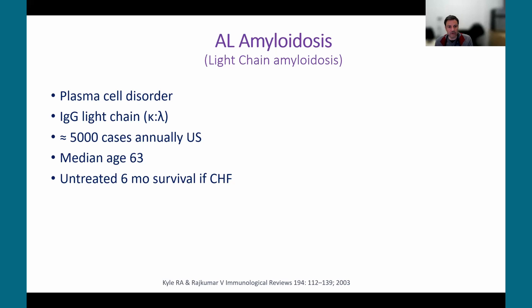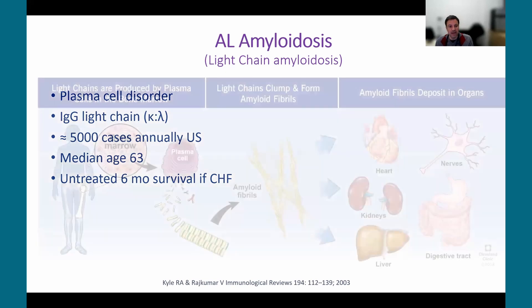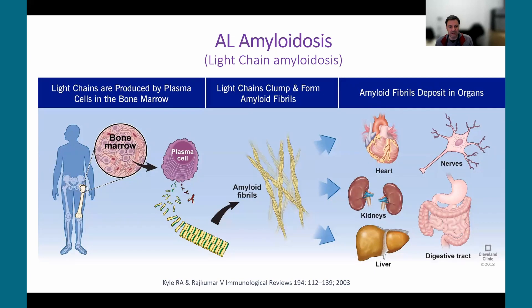AL amyloidosis is a rare condition — about 5,000 to 7,000 new cases annually in the United States. It's a plasma cell disorder, like a cancer, with a median age of diagnosis of 63. Historically, if someone had AL amyloidosis and presented with heart failure, they had a dismal prognosis. It is a multi-system disease; the two most common organs affected are the heart and the kidneys, where it typically causes glomerular damage and proteinuria. Liver dysfunction, neuropathy, and GI symptoms can also occur.